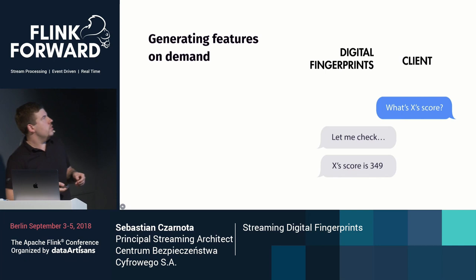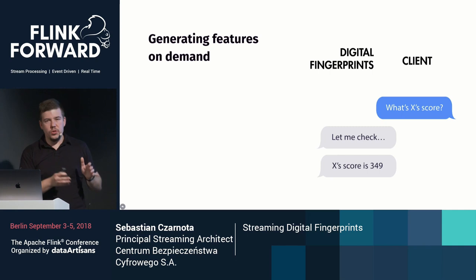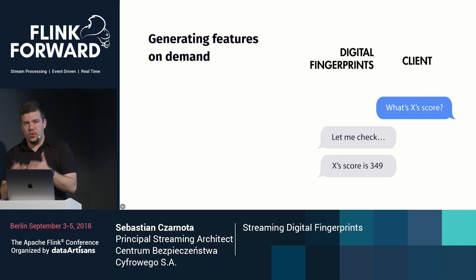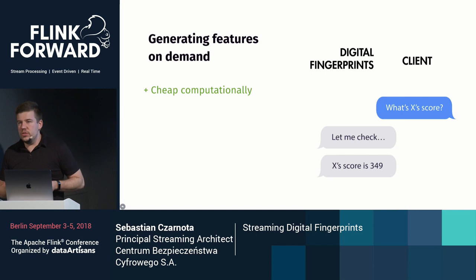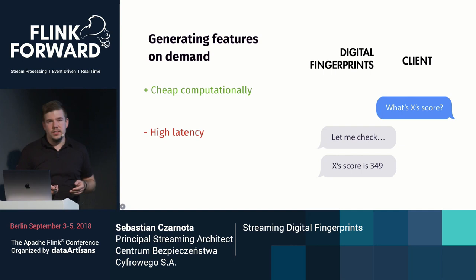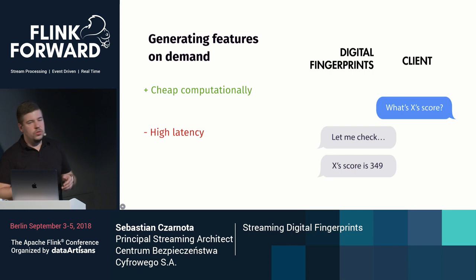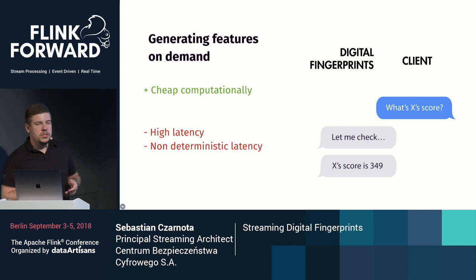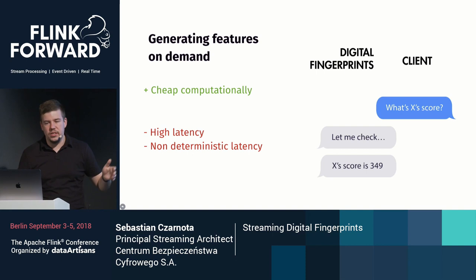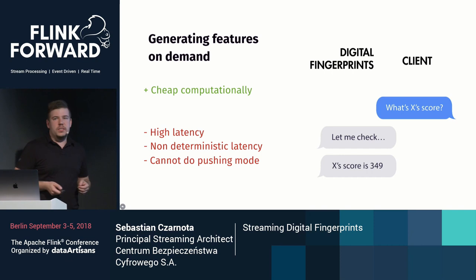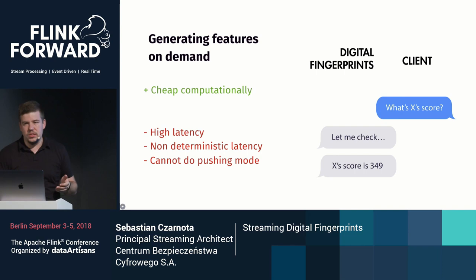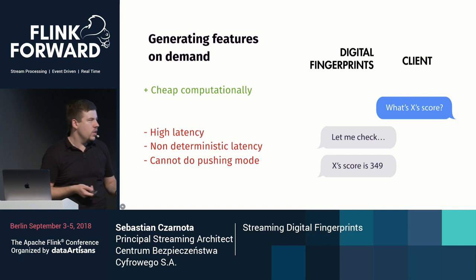Before Flink, we used a custom solution. We thought it would be enough to provide the score on demand: when our partner asked about some session, we'd take all events, process through our models, and generate the model score at that point. Despite being cheap because we only did necessary computations, it gave us very high latency because we had to reprocess all data at one point while the user waited. And we got non-deterministic latency — the longer the session, the longer processing takes. Also, we could not work in pushing mode. This was the moment we chose to find a pure stream processing framework, and this was when we selected Flink.